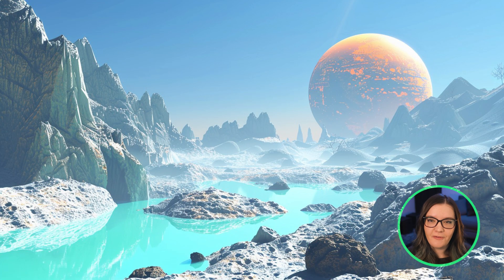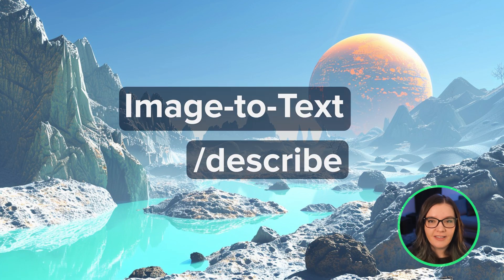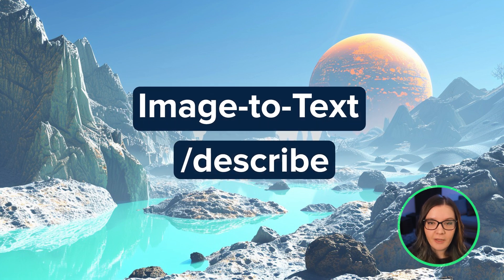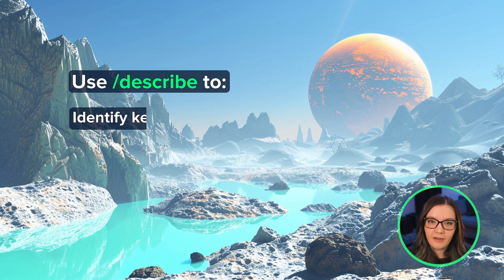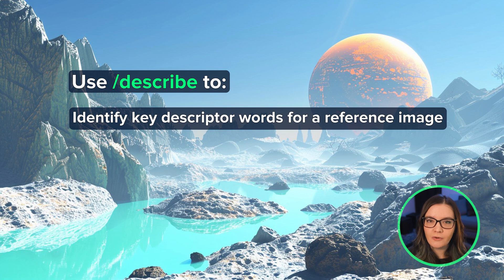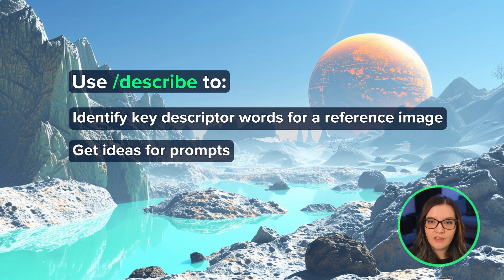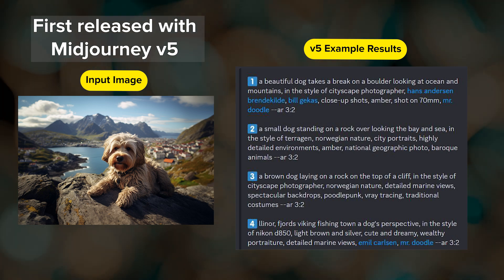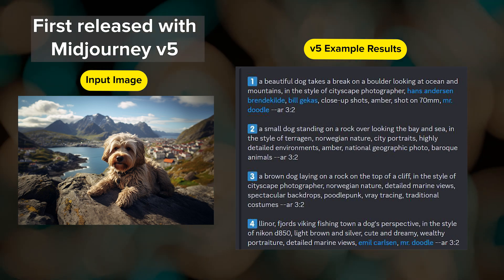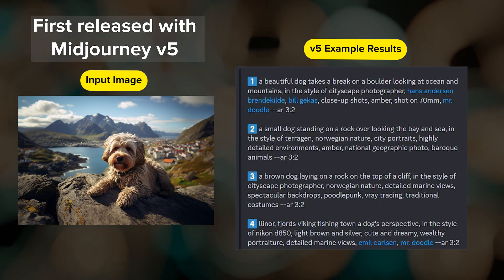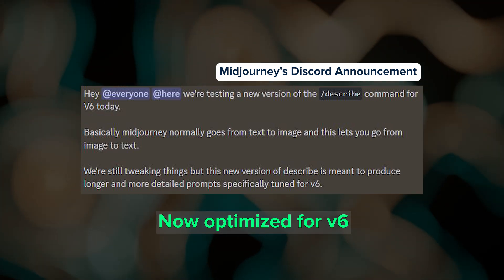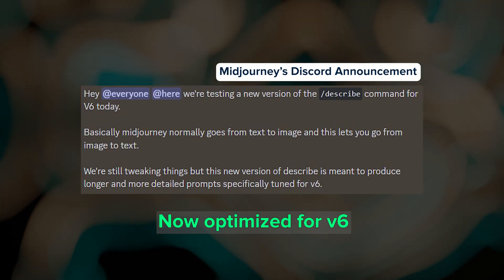Next we'll talk about a feature that doesn't get a lot of attention. Did you know that Midjourney has an image-to-text model? This feature is called Describe and it can be useful when you're struggling to find the right words to describe an image or when you just need inspiration for your prompts. Describe was first released about a year ago and was initially tuned to work with Midjourney's v5 model, but as of the latest update it has been optimized to provide text results that work best with v6.